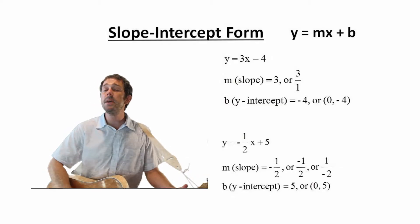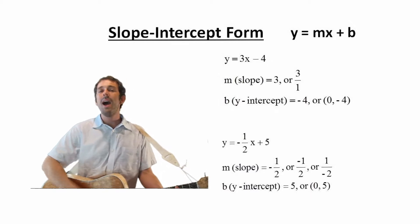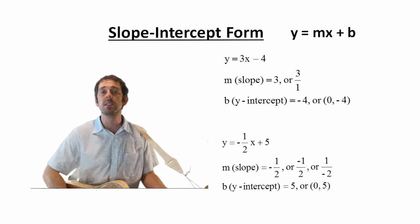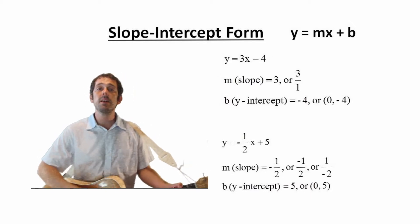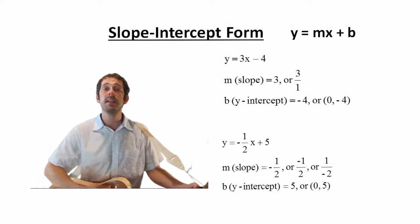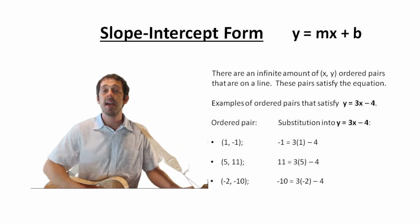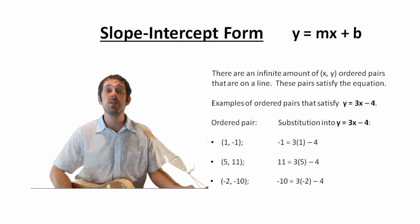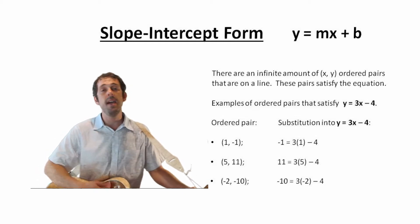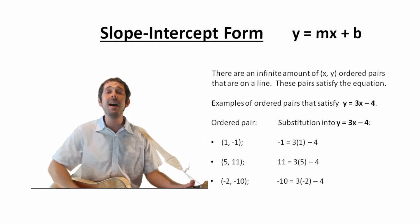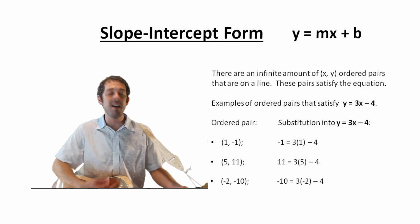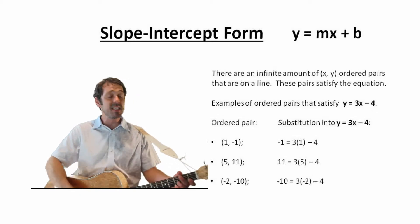Slope-Intercept Form: y equals mx plus b. m is the slope, b is the y-intercept. The x and the y represent each ordered pair that's on the line, and the pairs go on and on that satisfy the equation.